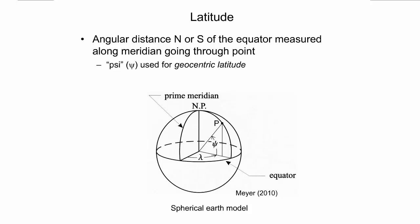The latitude of a point on a sphere is the angular distance north or south of the equator measured along the meridian that runs through that point. In the figure, the red rectangle outlines the latitude angle. This angle encloses two sides which share a common endpoint, the apex, in the Earth's center. This type of latitude, where the angle apex is located in the center of the geometric reference surface, is called geocentric latitude, and denoted by the lower case Greek letter psi.